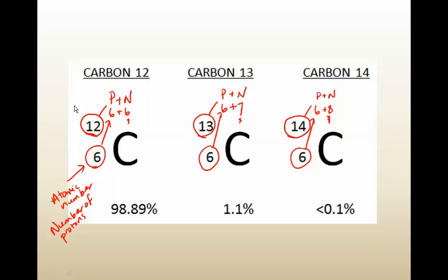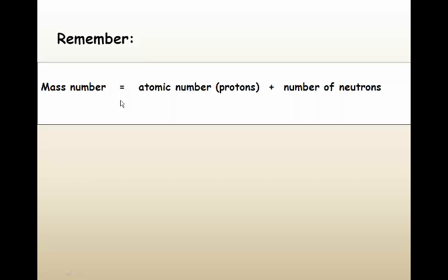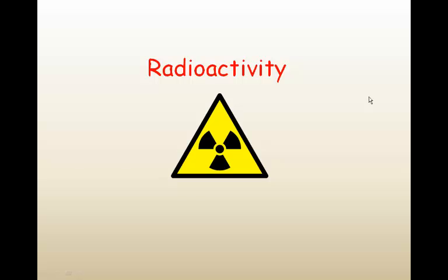So remember that the mass number is equal to the number of protons plus neutrons. Mass number equals the number of protons, which is also the atomic number, plus the number of neutrons. Okay, now we're ready to talk about radioactivity.